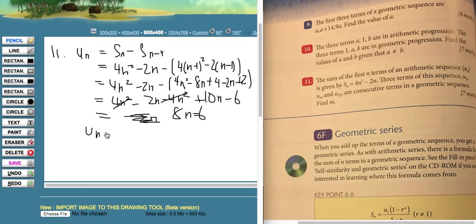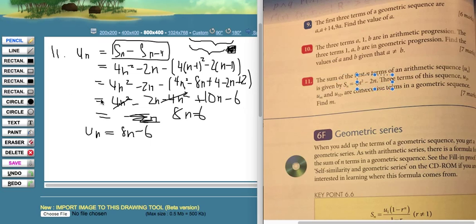So we have the general form for un equals 8n minus 6 according to what we're given, and this property where we take the sum of the first n terms minus the sum of the first n minus 1 terms is whatever term this is. That's just using all the pieces of information that we're given in the problem.